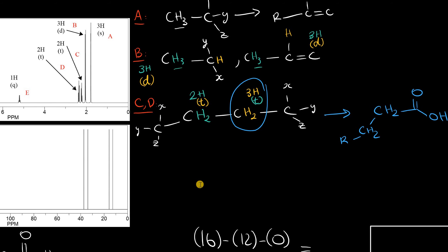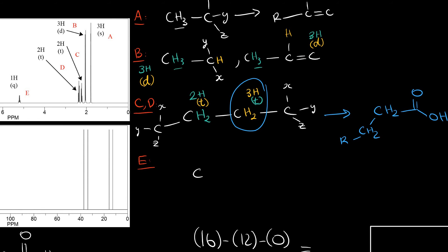Signal E is close to 5 parts per million, and we said it's probably an internal alkene. If it's an internal alkene, that means on both sides, we have R groups. I'll label this R prime. But the most important thing to note is that this hydrogen, as a part of the alkene, has three proton neighbors because it's split into a quartet. So it must be adjacent to a methyl group.